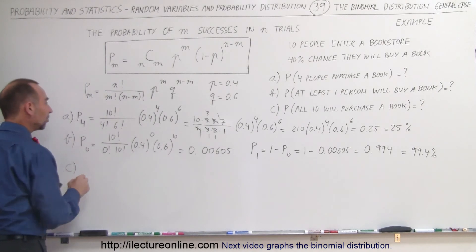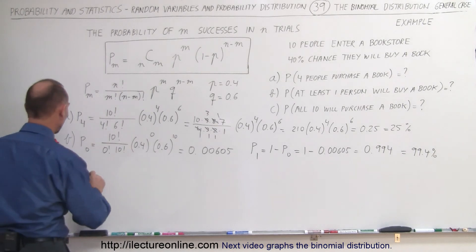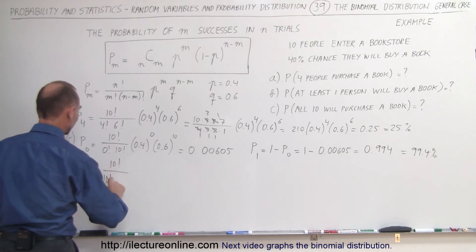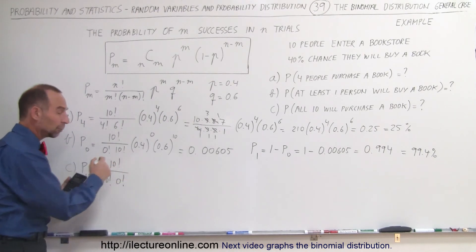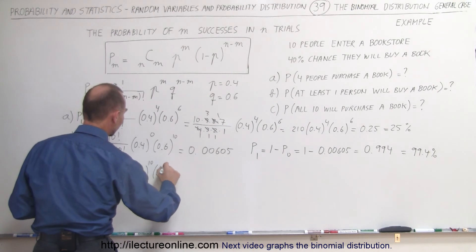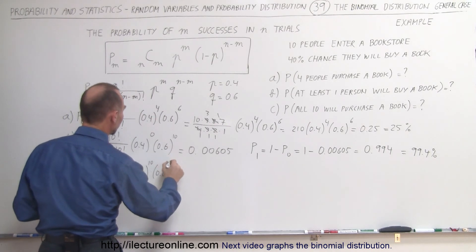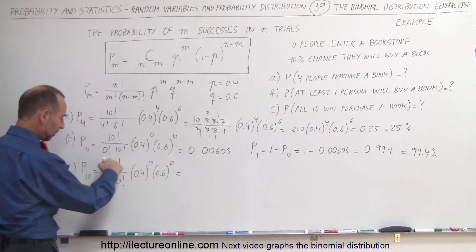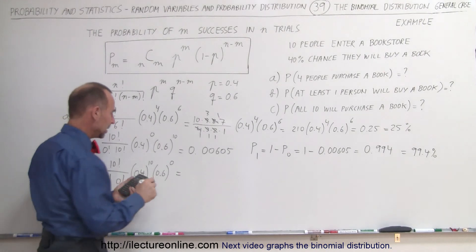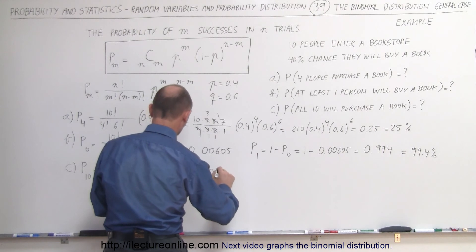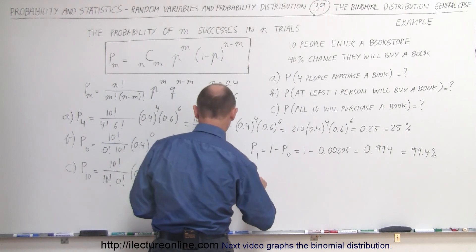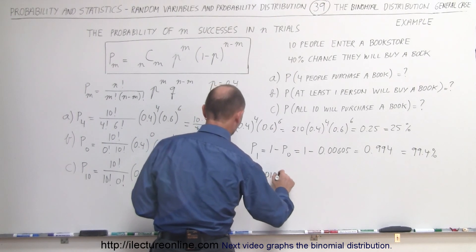Finally, for Part C: what is the probability that all 10 people will purchase a book? P(10) equals 10 factorial divided by 10 factorial times 0 factorial — this whole combination term equals 1 — times 0.4 to the 10th power, times 0.6 to the 0 power, which is also 1. So the answer is 0.4 to the 10th power, which equals approximately 0.000105, or 0.0105%.